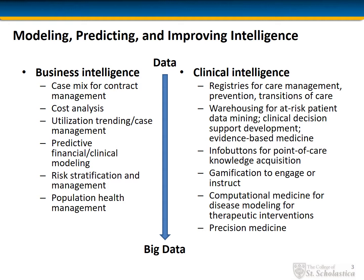Some examples of uses of modeling, predicting, and improving intelligence on the business side of healthcare include case mix for contract management, cost analysis, utilization trending or case management, predictive financial clinical modeling, risk stratification and management, and some forms of population health management.